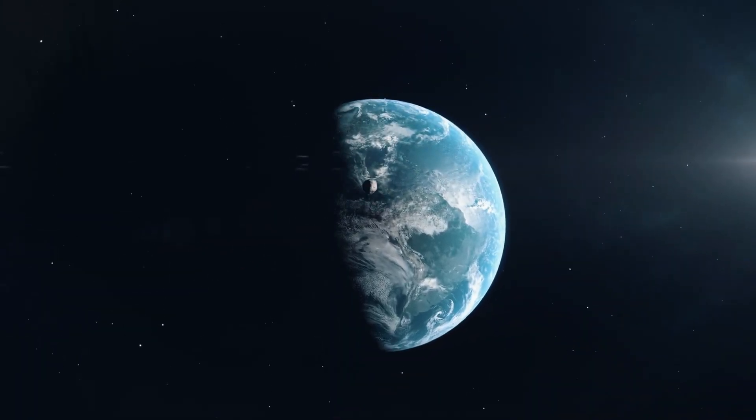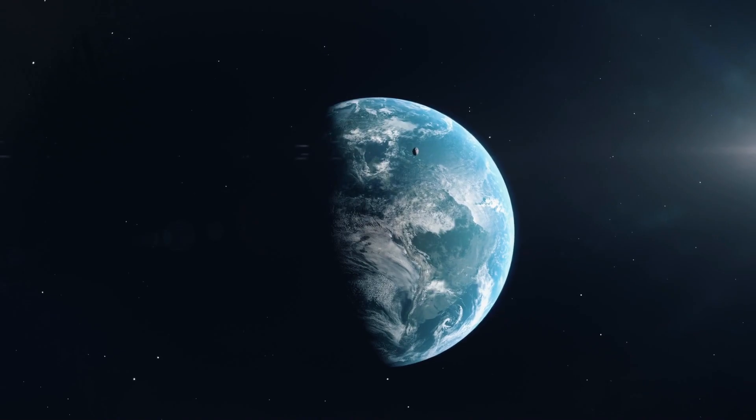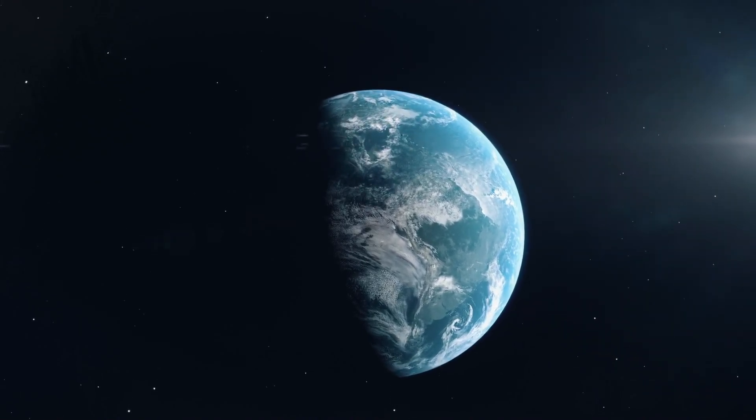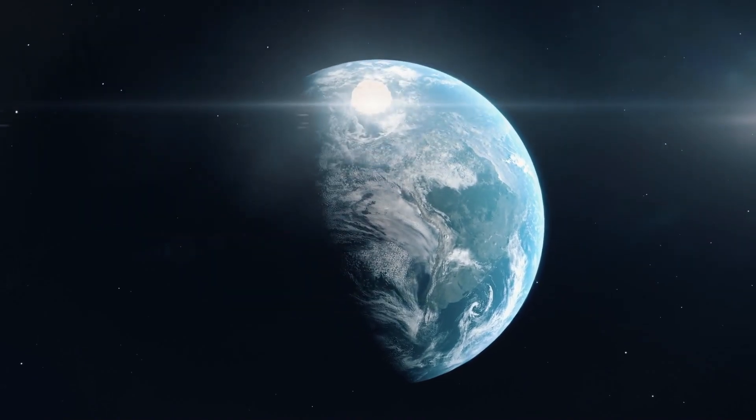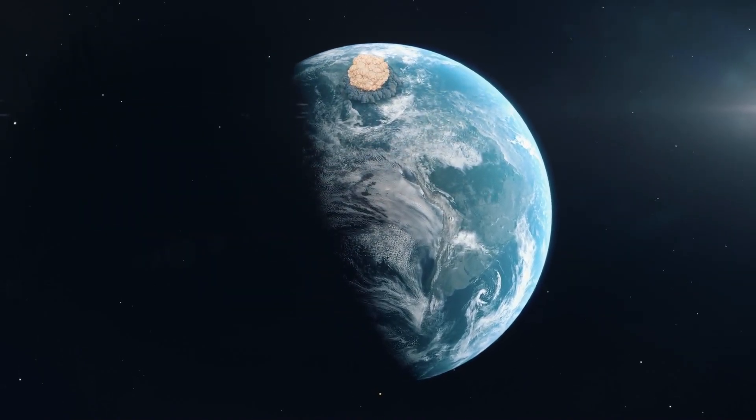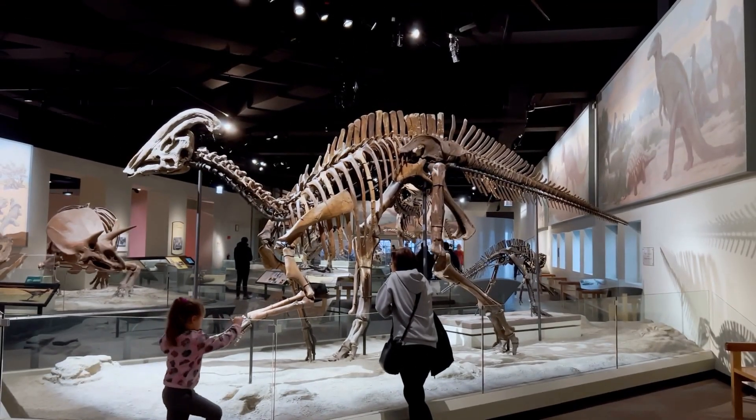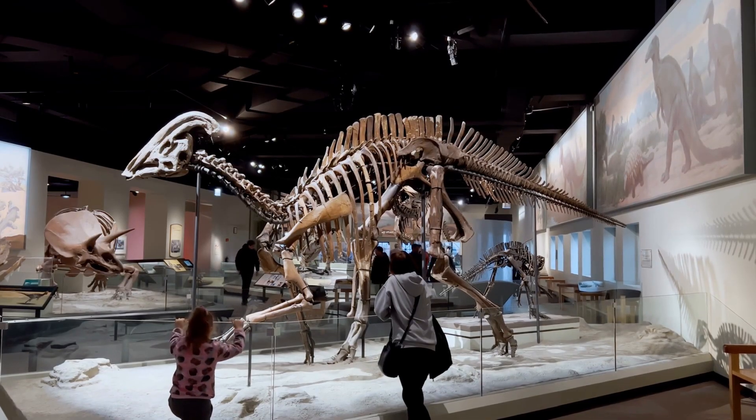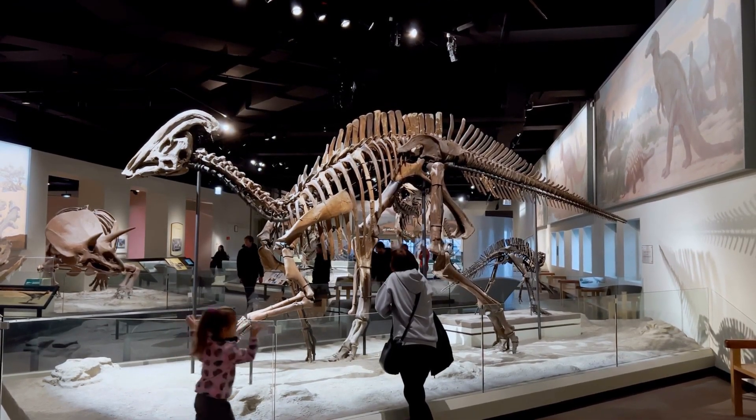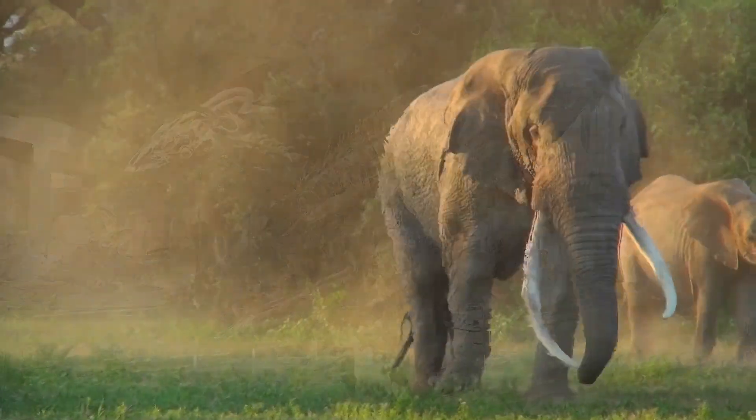You might have guessed where this is going. An asteroid slammed into our planet 66 million years ago, roughly where Mexico now stands, and spewed up so much material into the atmosphere that it blacked out the sun. This resulted in catastrophic climate shifts that wiped out the dinosaurs. Mammals became increasingly common in the next generation of developing creatures.